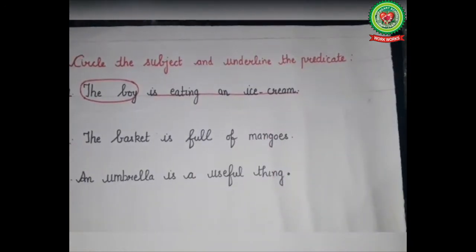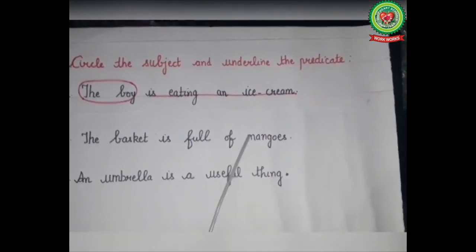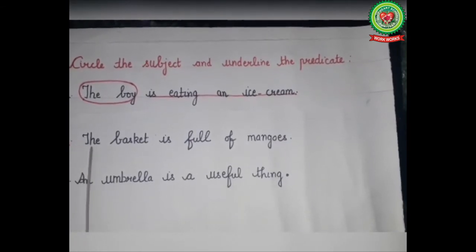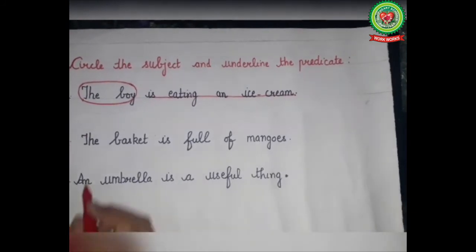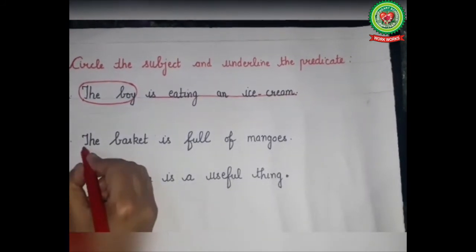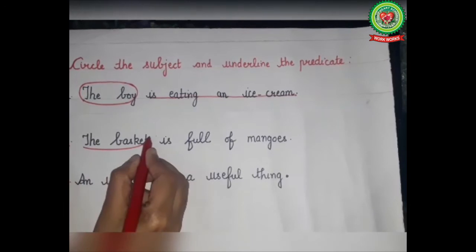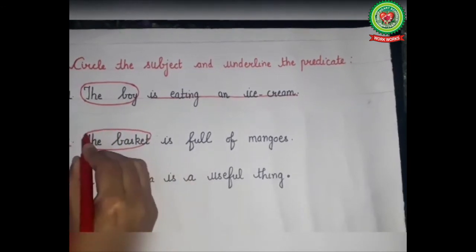Next example: 'The basket is full of mangoes.' About whom we are talking in the sentence? The answer is 'the basket,' so we will circle 'the basket' as the subject of the sentence.